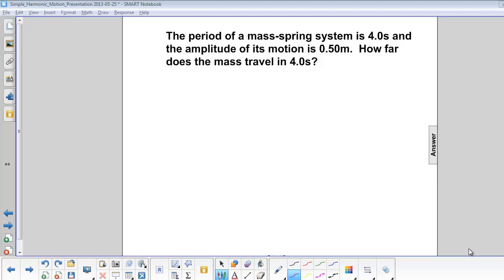The period of a mass spring system is 4 seconds and the amplitude of its motion is 0.5 meters. How far does the mass travel in 4 seconds?